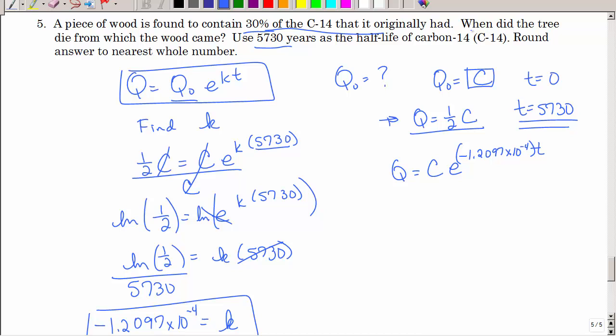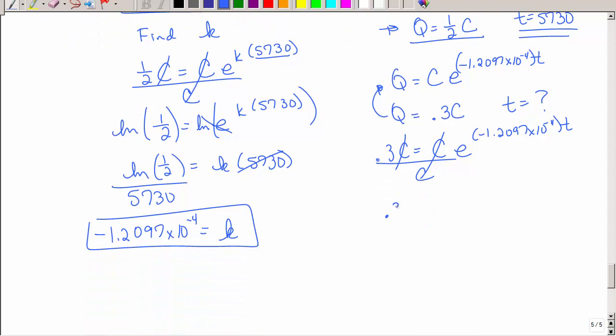What were we supposed to do? We're supposed to find when did the tree die? Meaning what is T when we have 30% of the carbon 14 that it originally had? Well, this was the original amount. So if I have 30% of that, that means Q is 0.3 times C. Solve for T. So we're going to put that in there. 0.3 times C equals C. E to the negative 1.2097 times 10 to the negative fourth T. What's going to happen? Those are going to divide out.